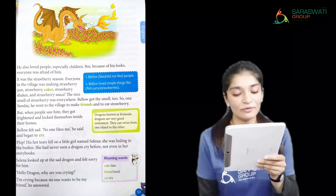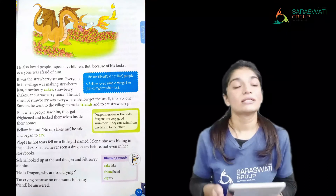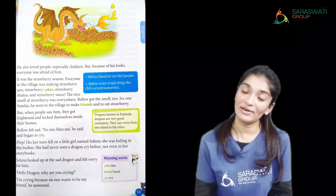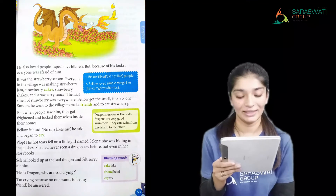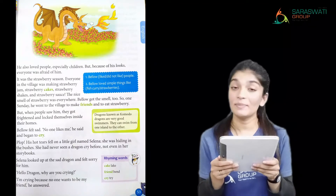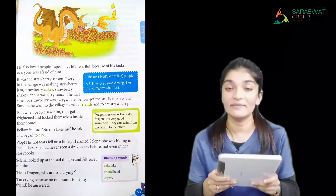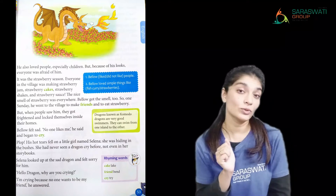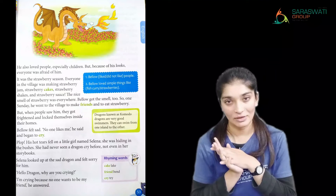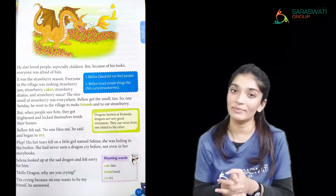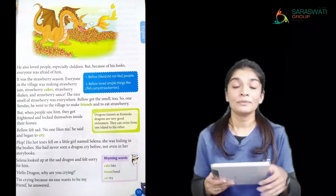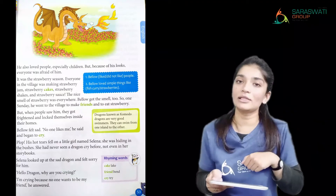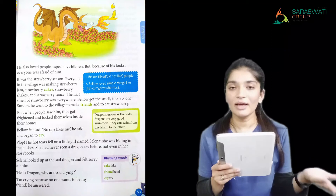So one Sunday he went to the village to make friends and to eat strawberry — because the smell of strawberry was coming from there. But when people saw him, they got frightened and locked themselves inside their homes. Just like we would lock ourselves in our houses if a dragon suddenly appeared in our area — all the villagers panicked and hid.